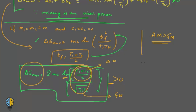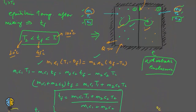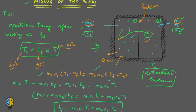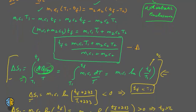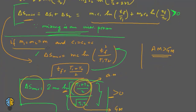This is the end of the second application of the entropy principle — the mixing of two fluids. The key formulas to remember are: Tf = (m1·c1·t1 + m2·c2·t2) / (m1·c1 + m2·c2) from heat gain equals heat loss, and ΔS_universe = m1·c1·ln(Tf/t1) + m2·c2·ln(Tf/t2). The special case applies when mass and specific heat capacities are equal.